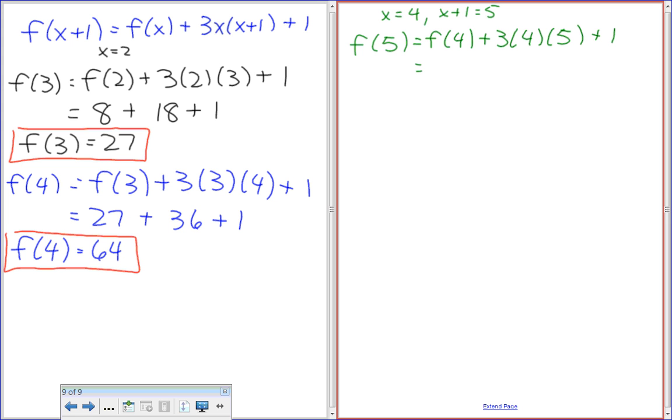f of five equals f of four. Yeah. Plus three times four times five. This is going to be a big number. Keep going, Madison. f of four equals 64. Yeah. Plus twelve times five is sixty.